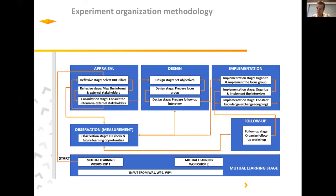All of this was done by following a structured, unified methodology. All four experiments organized in Feed for RRI followed this approach in order to ensure comparable results that can lead to practical and policy implementations. This methodology started with an appraisal stage where each experiment organizer was asked to map its internal and external quadruple helix stakeholders.